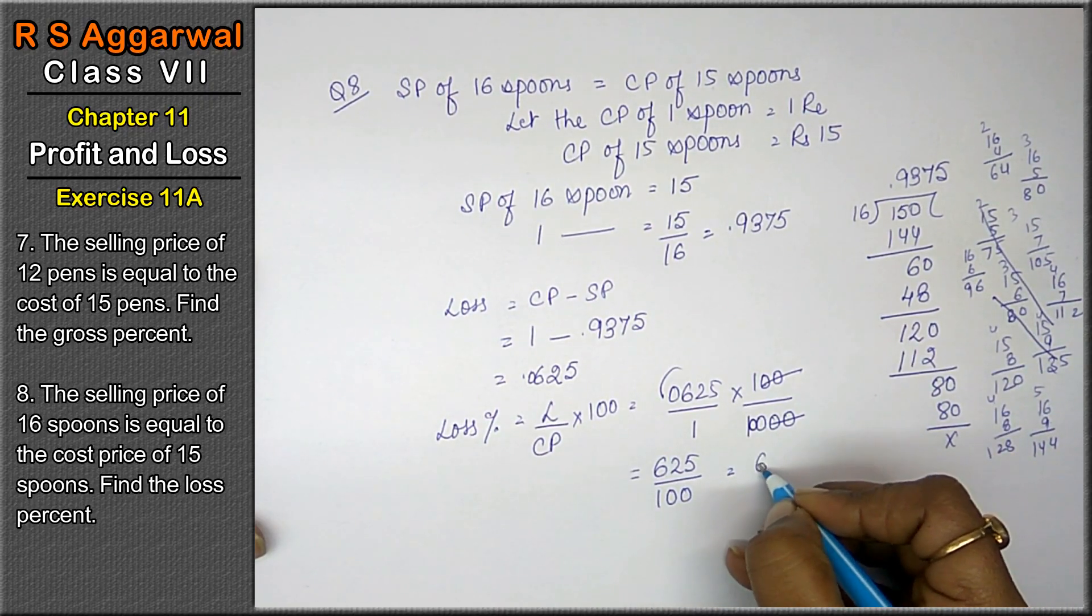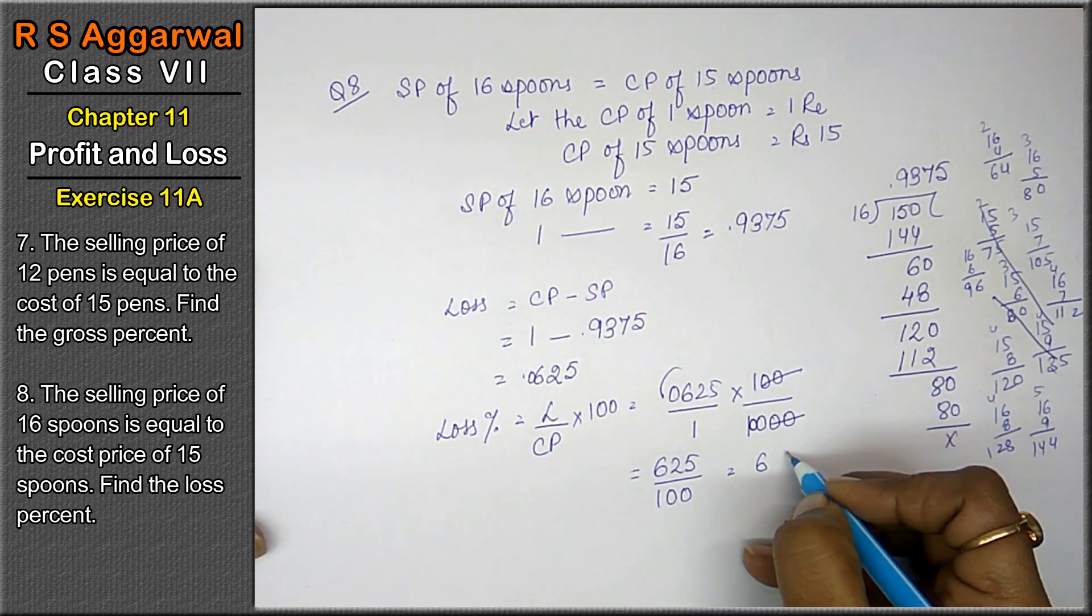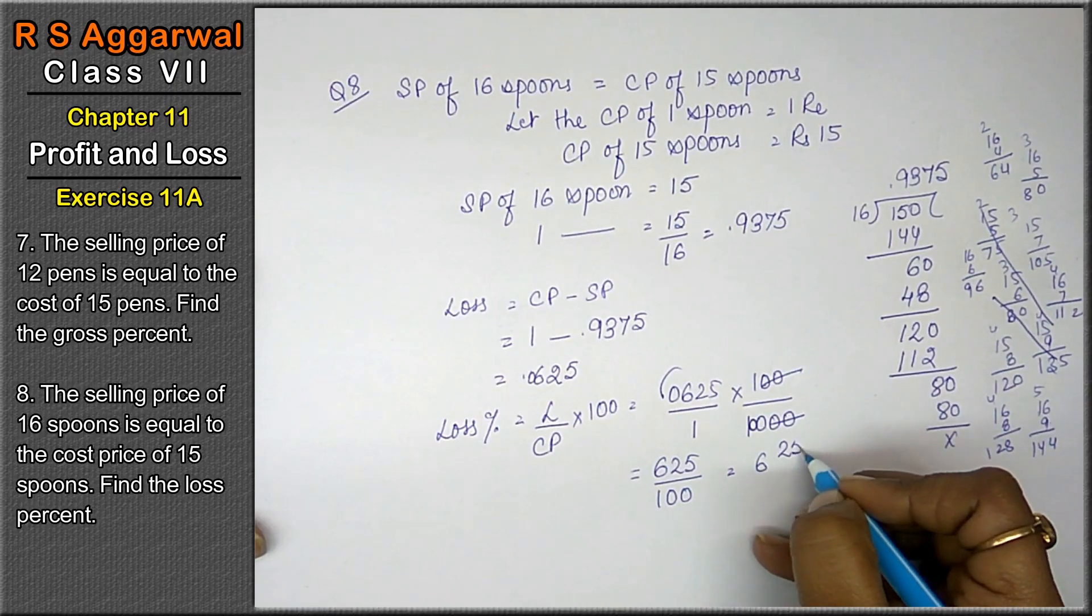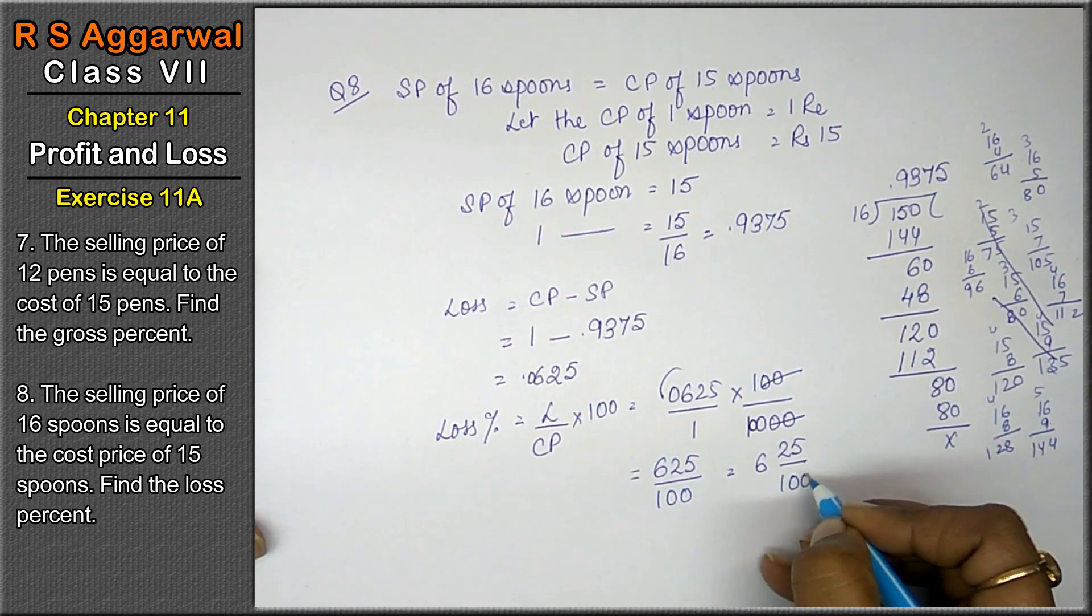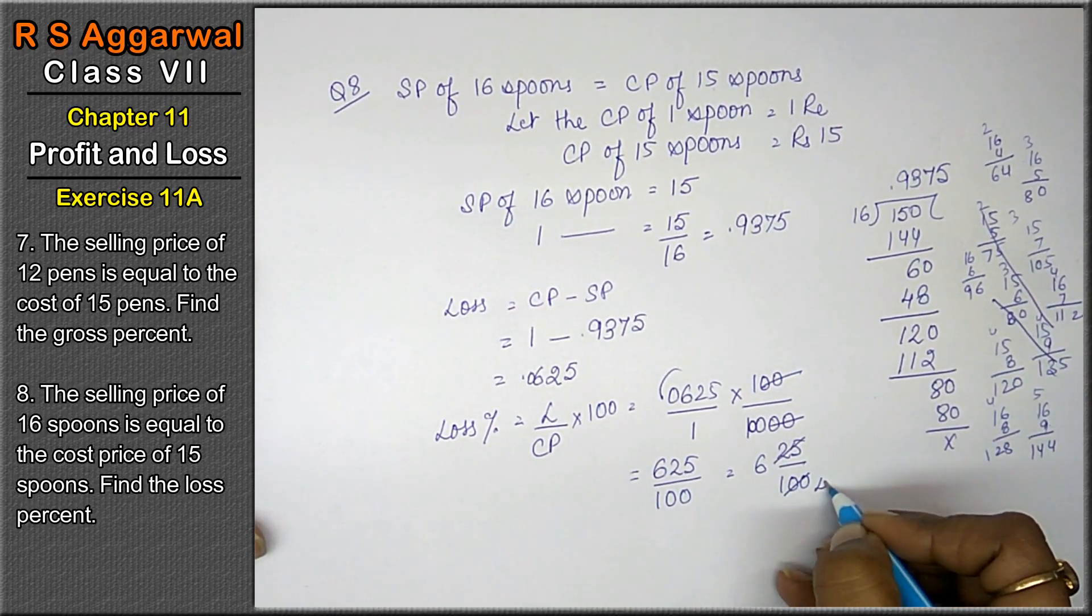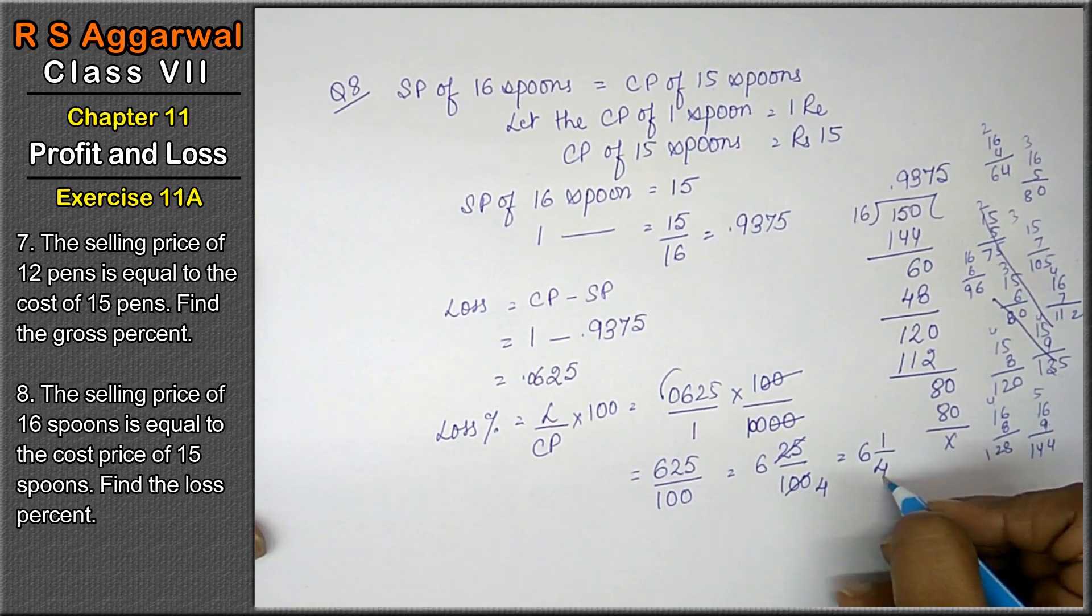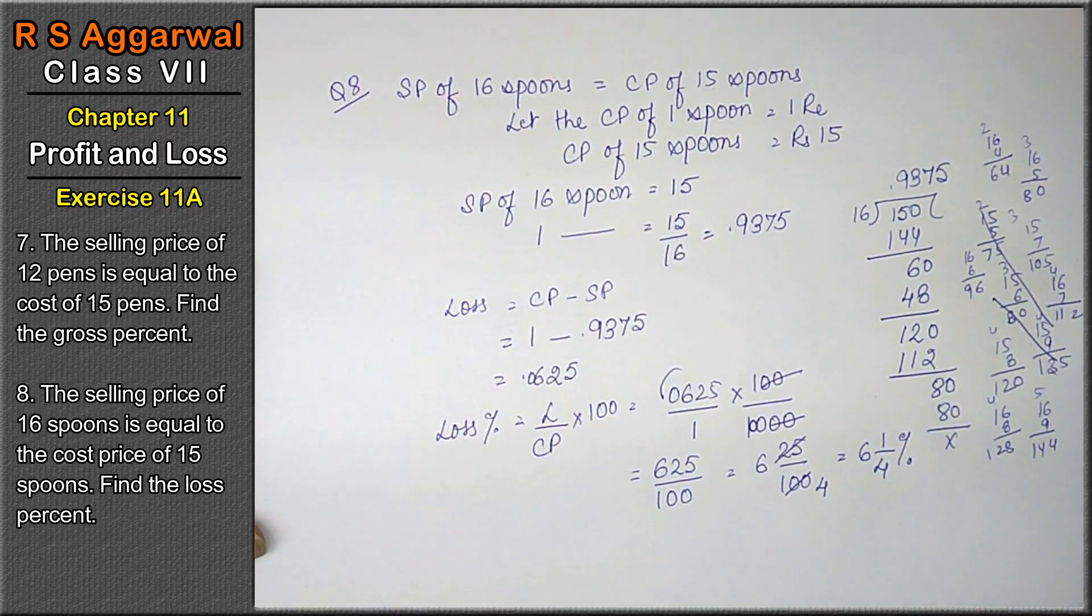That means 600 upon 100 plus 25 upon 100. Cancel by 4. The answer is 6 whole 1 upon 4 percent.